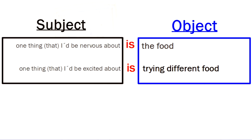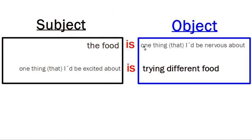Okay. So let's look at the idea of the subject and the object of the sentence. If we look at the sentence, it says, One thing that I'd be nervous about is the food. So my subject is the entire noun phrase, right? And my object is the food. But I can put this sentence in a different order. And I can put the food first and the noun phrase as the object.